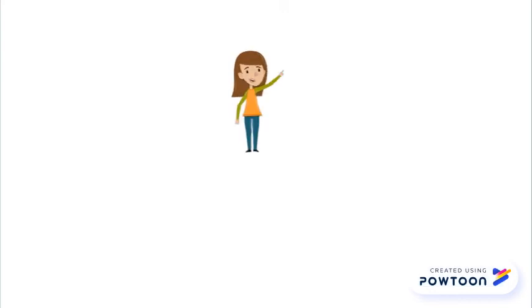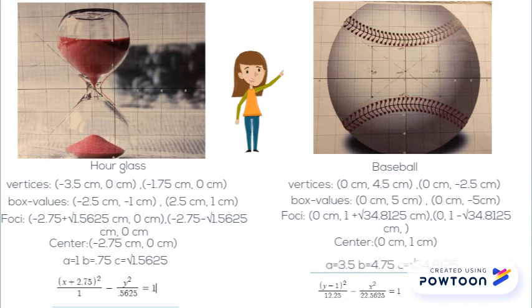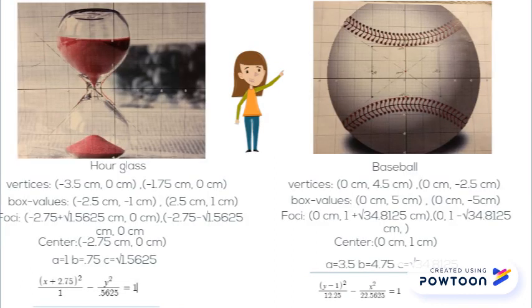To find the equations for my hyperbolas, I first found the center, then I took the slant asymptotes on either side to help me measure out my box values and my vertices. Once I had that, I used that information to find a, b, and c, a being the distance from the center to the vertices, b the center to the box values, and c the distance to the foci.